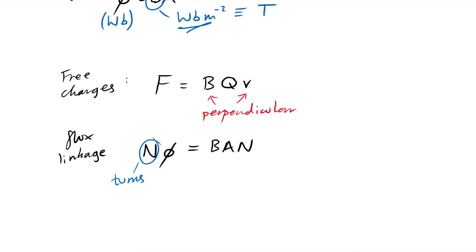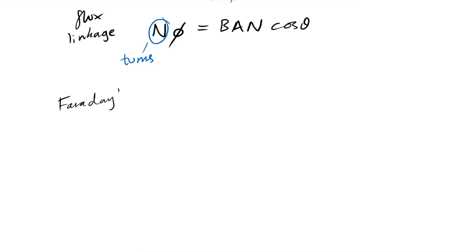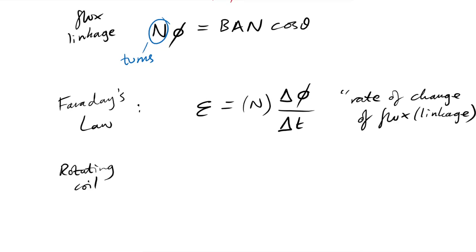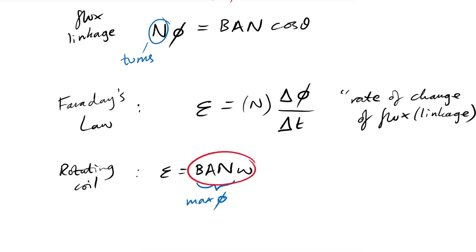Flux linkage is NΦ = BAN (with a cosθ factor included), where N is the number of turns in the coil. Faraday's law: induced EMF ε = −NΔΦ/Δt (rate of change of flux linkage). For a rotating coil, maximum EMF = NBAω, and the instantaneous EMF = ε₀ sin(ωt), very similar to the SHM displacement equation but with EMF₀ instead of amplitude.